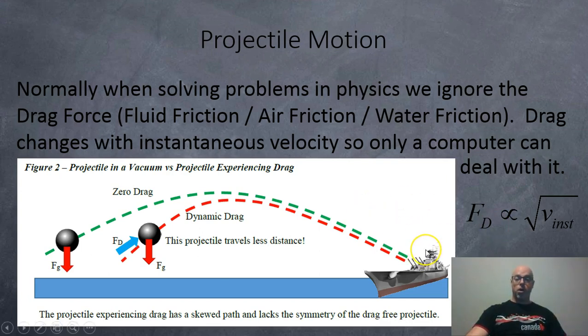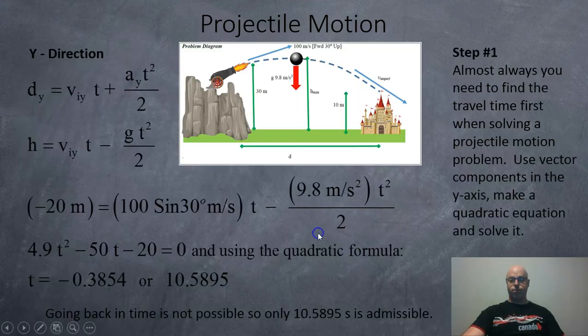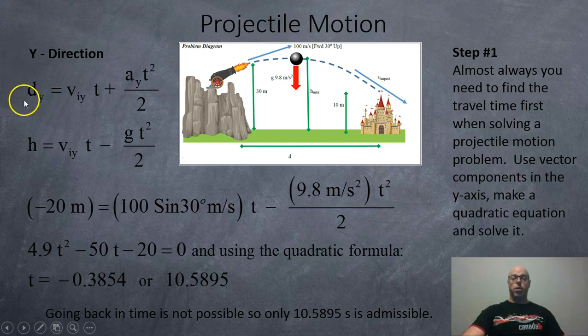Now if you're on the moon, there is no air, so it would be fine, and you would get a nice symmetrical parabola or quadratic function. So we're going to do two examples. Example one will have a decrease in height. Here we got a cannonball launched at 100 meters per second at an angle 30 degrees above the horizontal. It's going to travel in a parabola and land on the castle. We're going from 30 meters down to 10 meters, so we have a drop of 20 meters. When you do a question like this, you almost always need to find the time first, and it will be a quadratic equation.